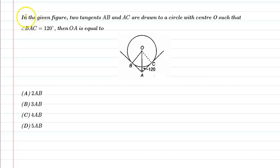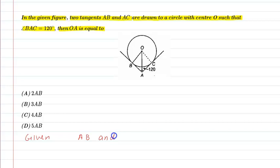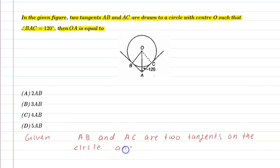Hello students, let us understand the following question. In the given figure, two tangents AB and AC are drawn to a circle with center O such that angle BAC is equal to 120 degrees. We need to find OA. Let's see the given information in this question.